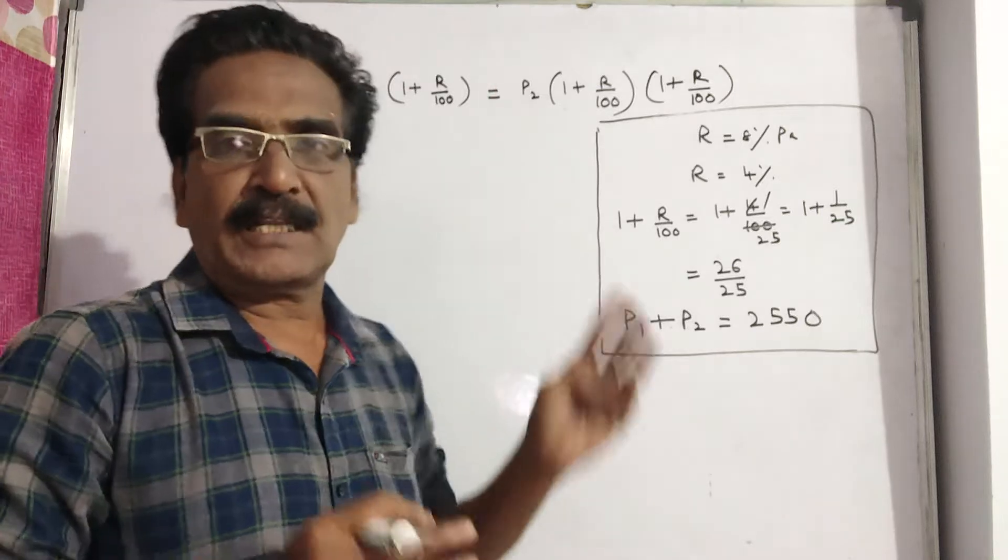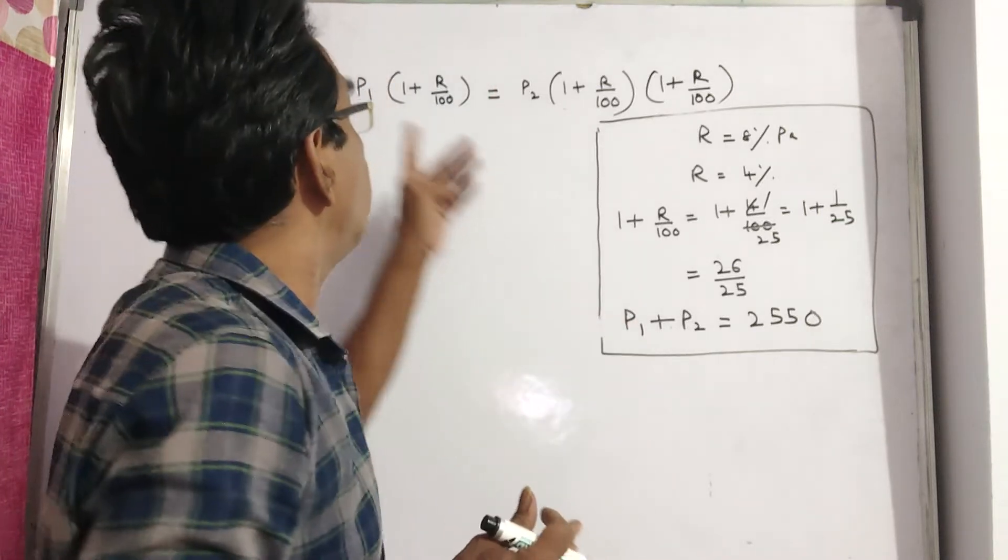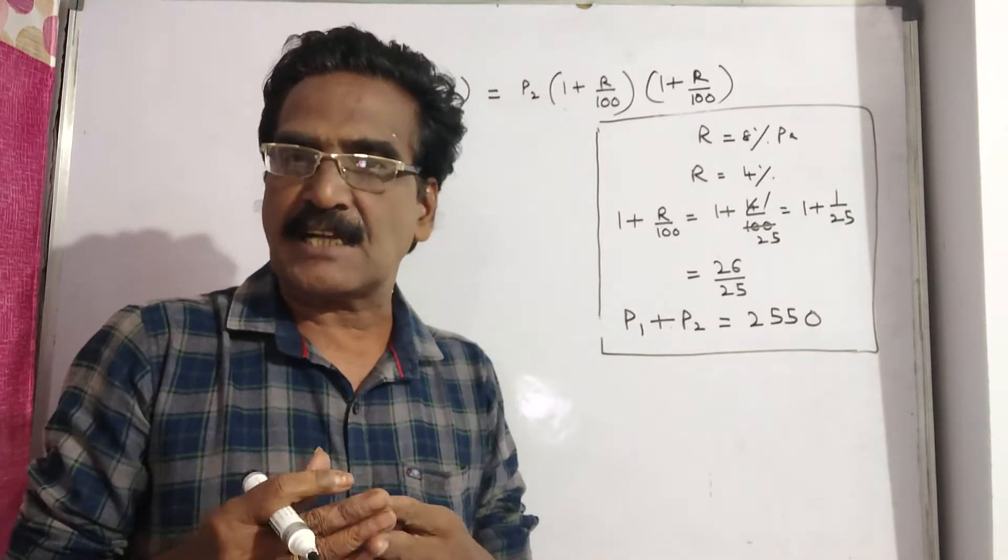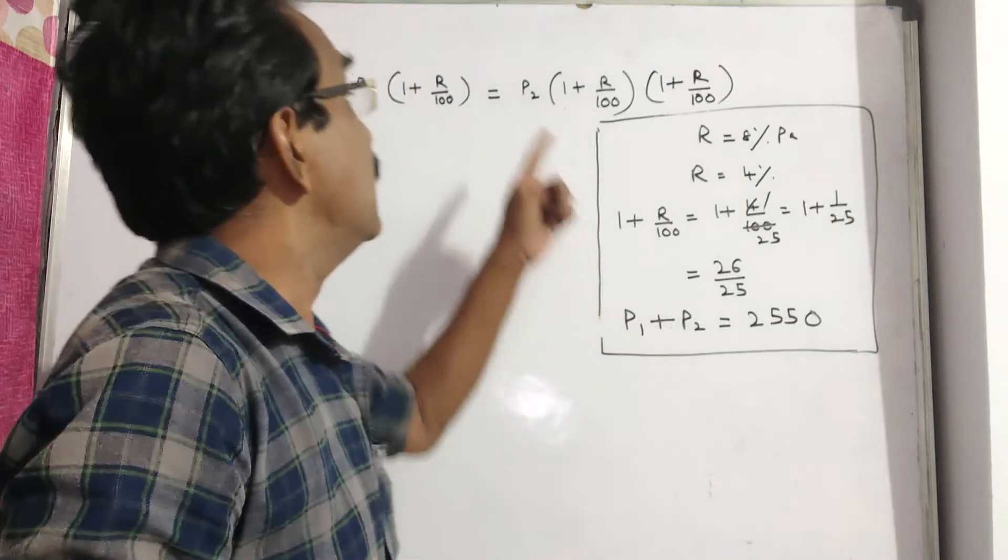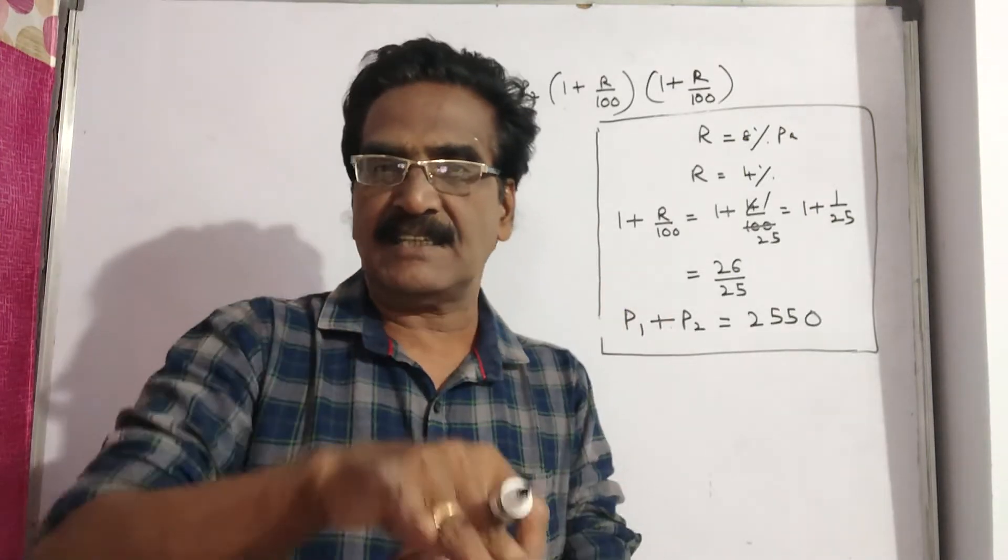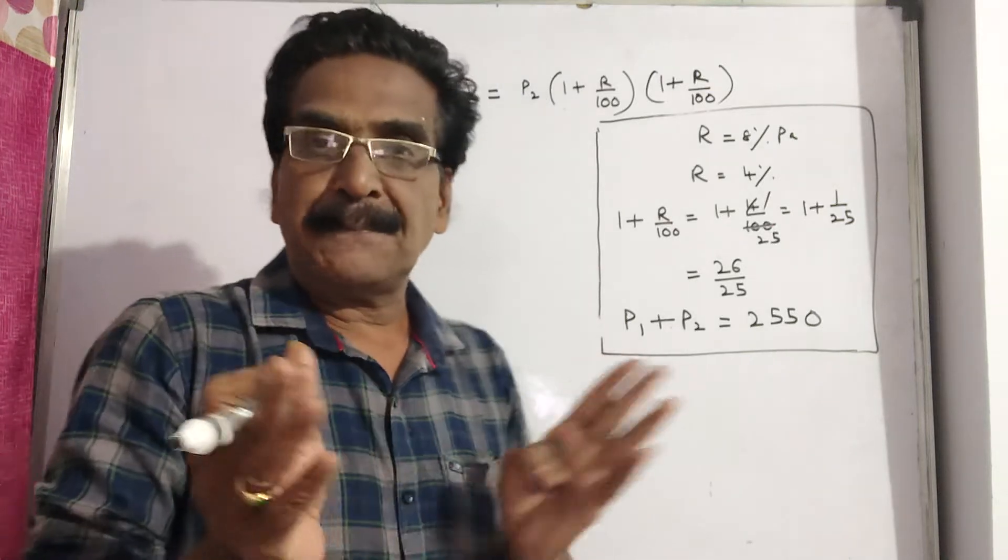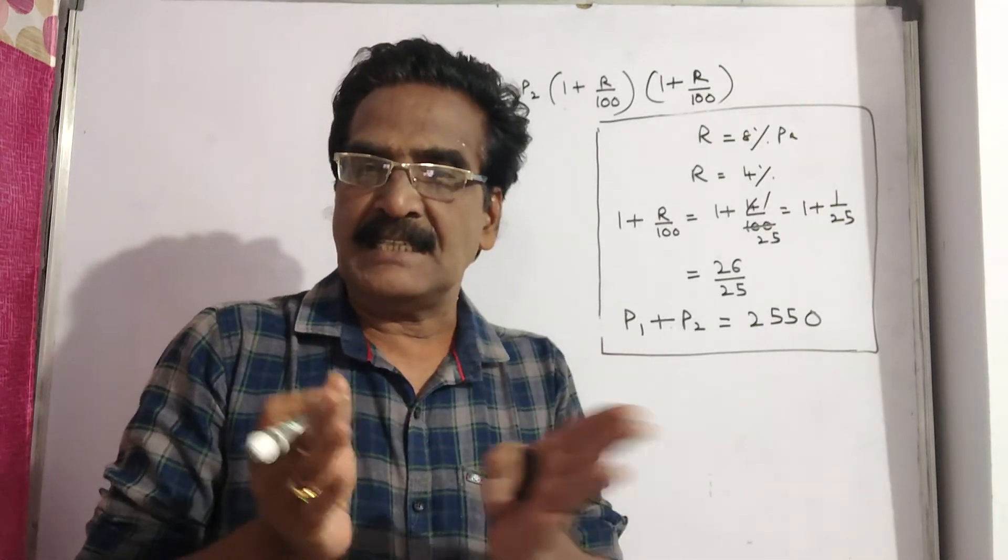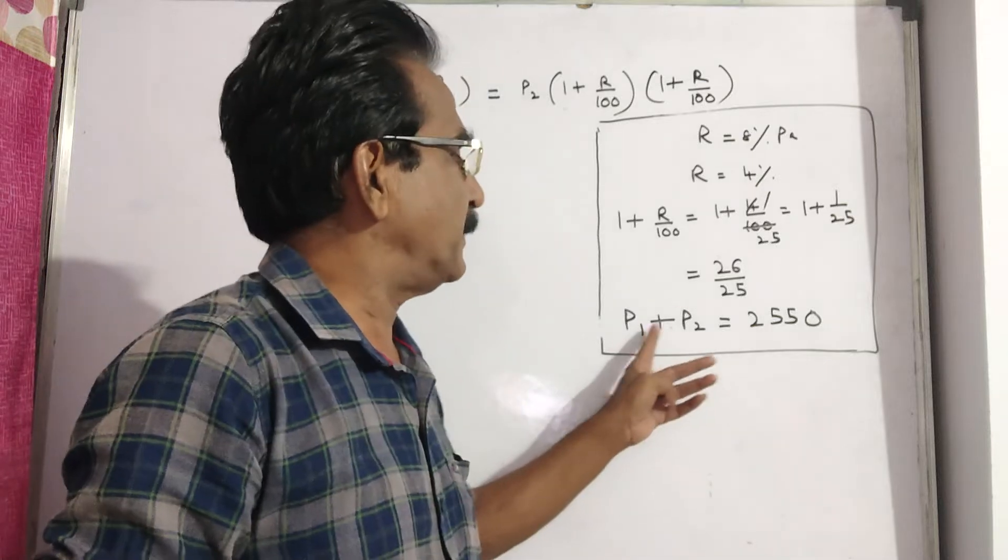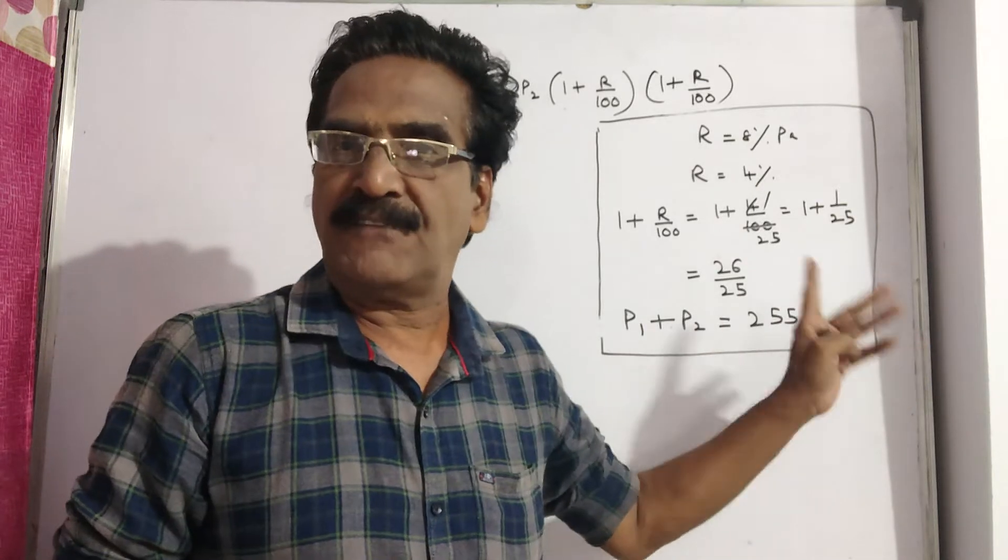Where P1 and P2 are the present worths. P1 is the present worth of the installment paid after 6 months. P2 is the present worth of the installment paid after 1 year. And P1 plus P2, the total worth, is given as 2550.